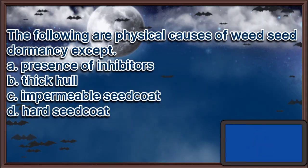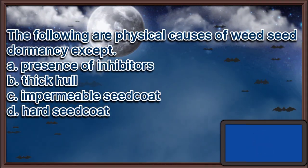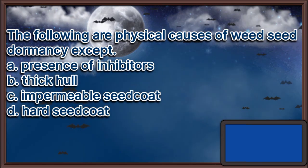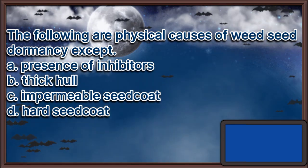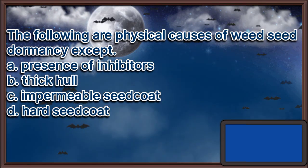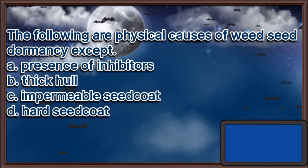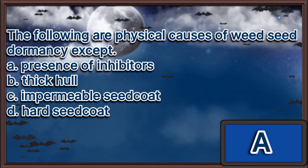The following are physical causes of weed seed dormancy, except. A. Presence of inhibitors. B. Thick hull. C. Impermeable seed coat. D. Hard seed coat. The answer is letter A.